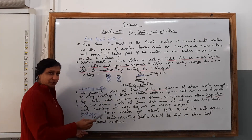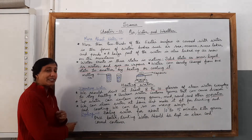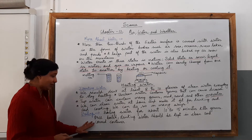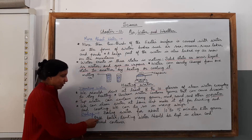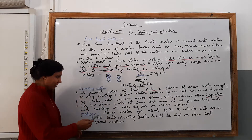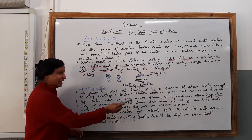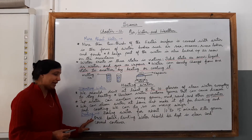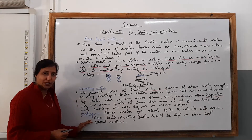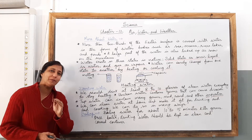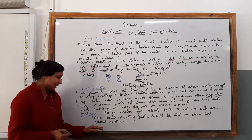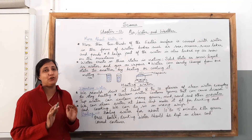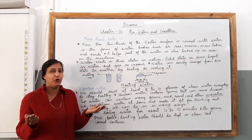We can clean water in many ways. The first way I am going to tell you today is boiling — a very simple method of making water suitable for drinking and free of germs. Boiling water for about 10 to 15 minutes kills the germs present in it. Once boiled, the drinking water should be kept in a clean and covered container. This is the simplest method to make water suitable for drinking. When it is kept in a covered container and cooled, that water is suitable for you to drink, as it is free of germs.